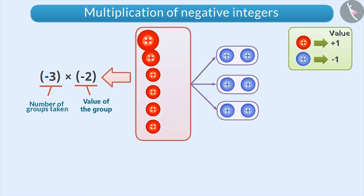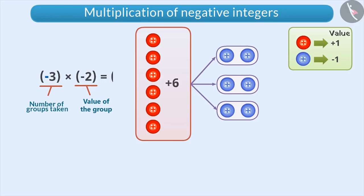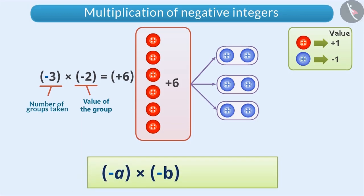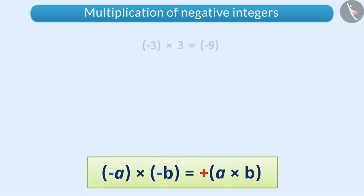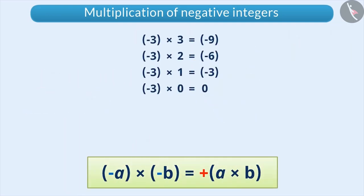After taking them out, we are left with six red buttons whose value is positive 6. This means minus 3 into minus 2 is equal to plus 6. Therefore, we can say that multiplication of any two negative integers always results in a positive integer.